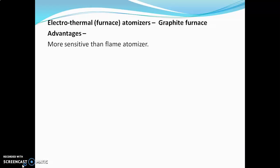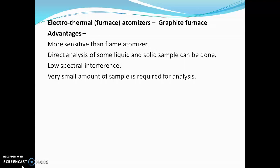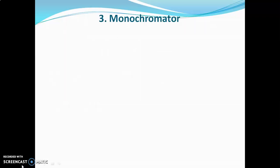Advantages of the graphite furnace: it is more sensitive than the flame atomizer; direct analysis of some liquid or solid samples can be done with no necessity to dissolve the solid in a solvent; low spectral interference occurs; and very small amounts of sample are required. Disadvantages: it is difficult to control, low precision, and it is expensive.